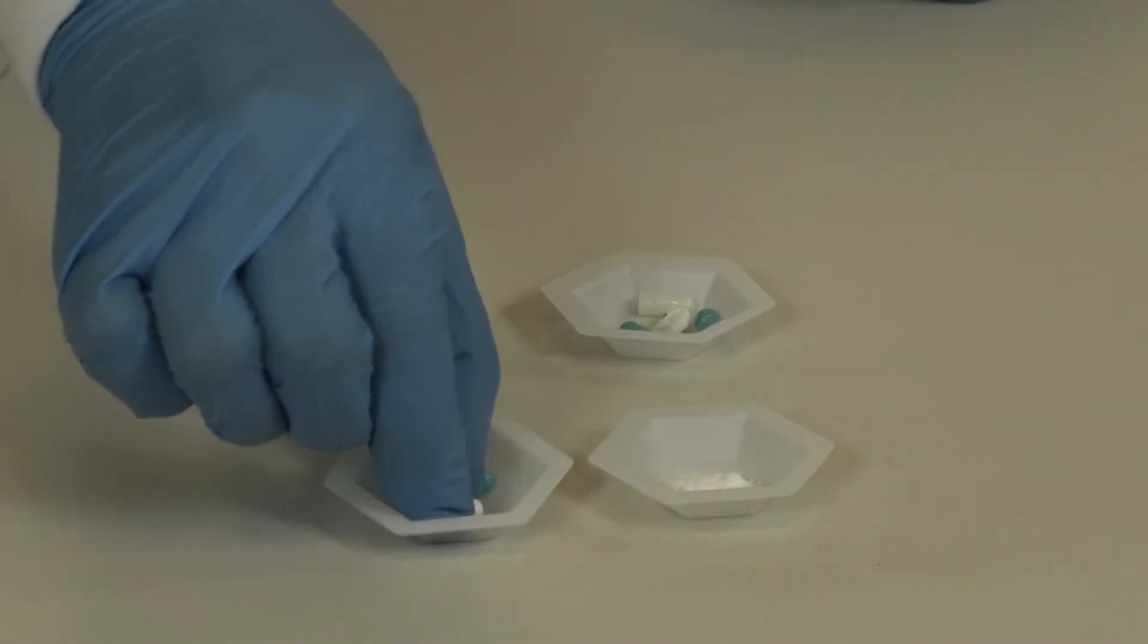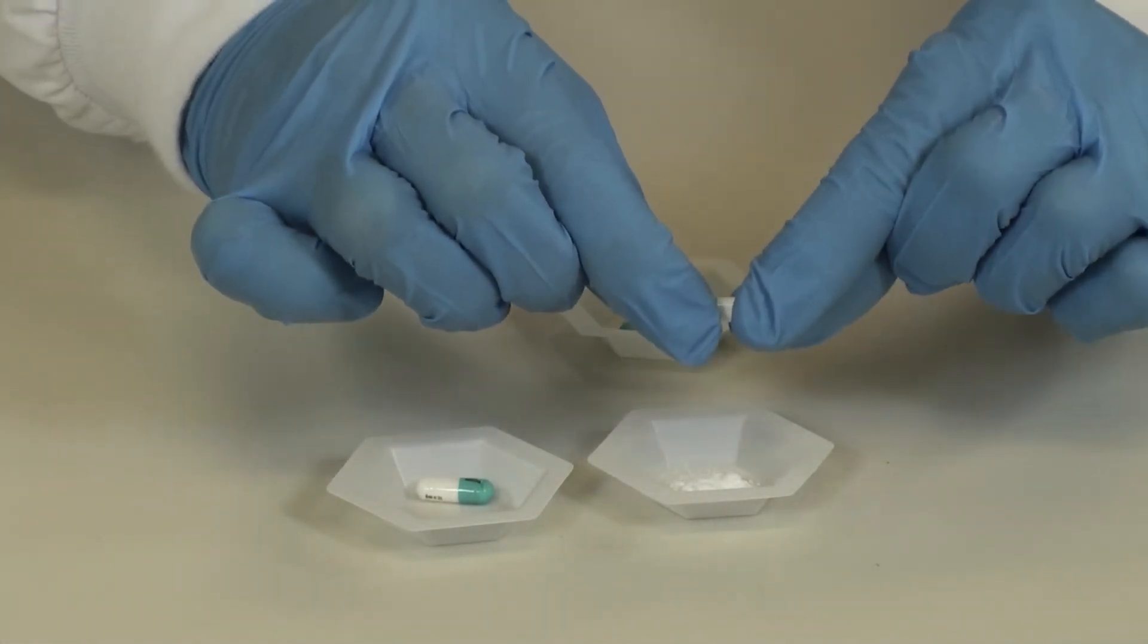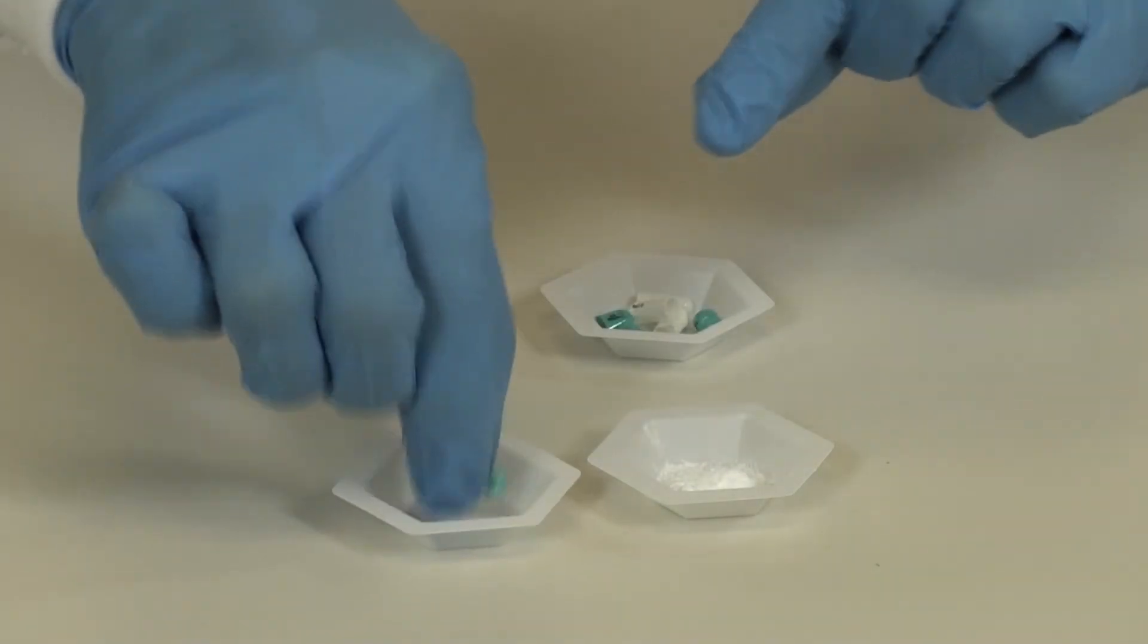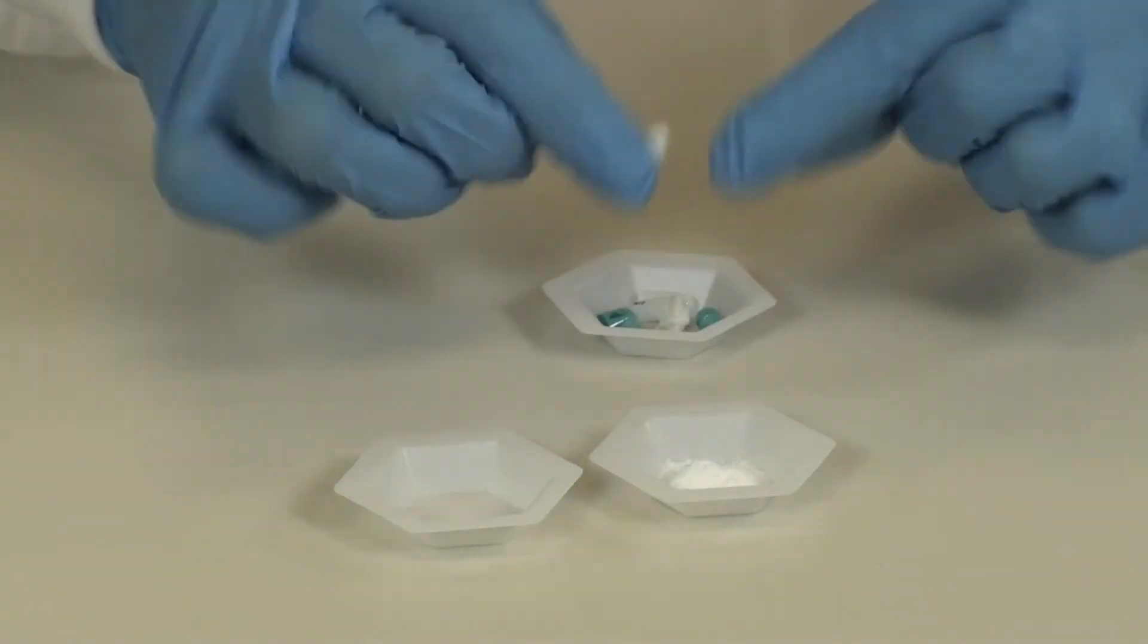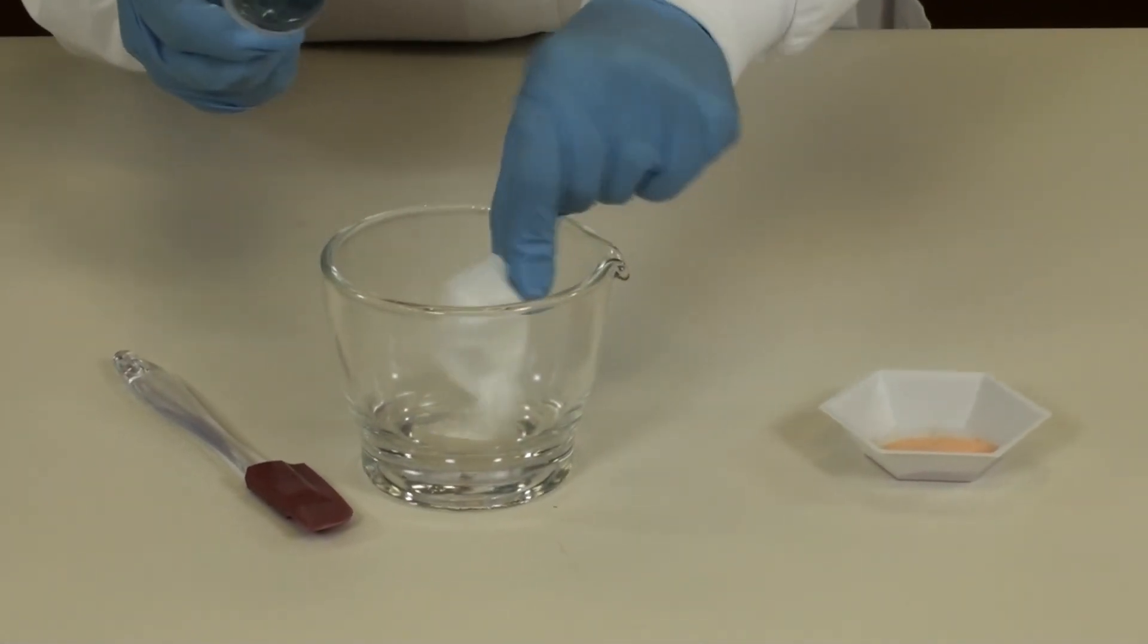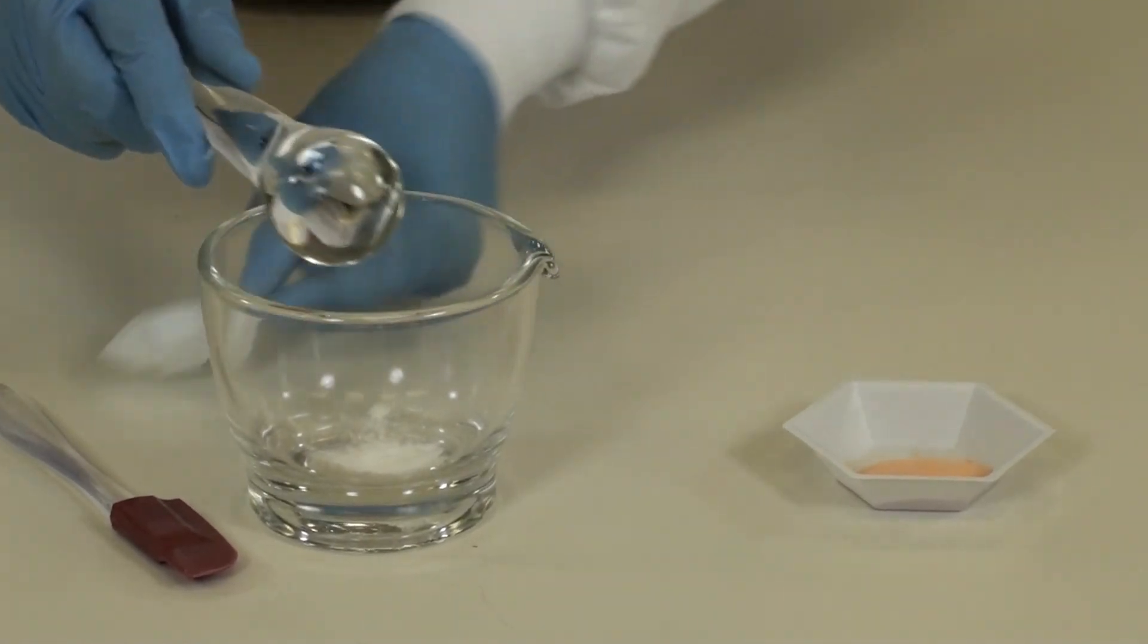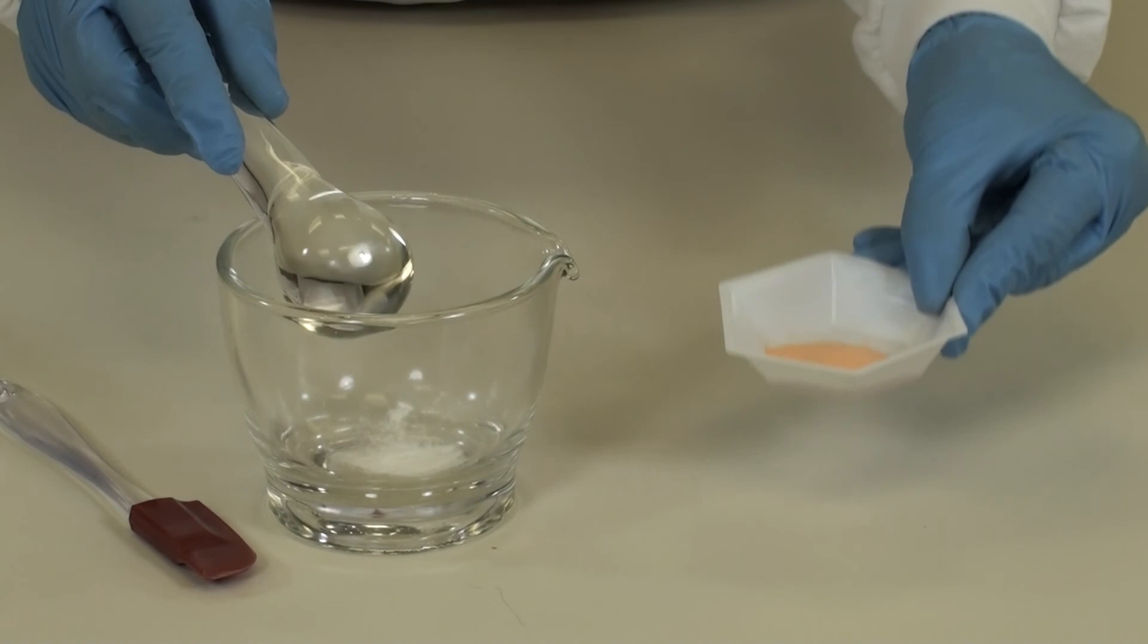Open the required number of hydrochlorothiazide capsules and empty the powder into a small weigh boat. Place the hydrochlorothiazide capsule powder into your mortar and geometrically mix the allopurinol powder with the hydrochlorothiazide.